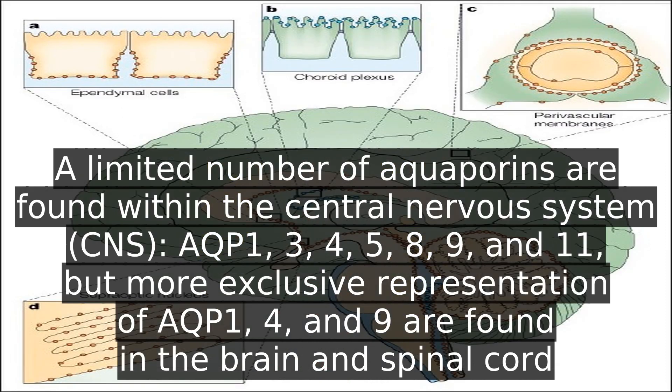A limited number of aquaporins are found within the central nervous system (CNS): AQP1, 3, 4, 5, 8, 9, and 11.